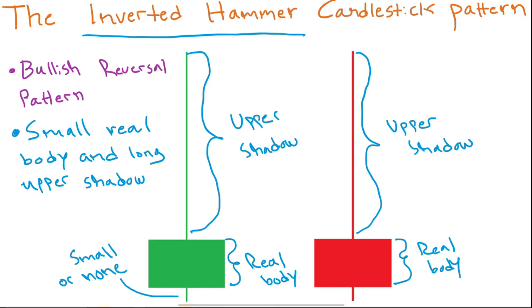In general, we want the upper shadow to be at least two times as long as the real body. In this case you can see the upper shadow is pretty much four or five times as long, but at minimum we want the upper shadow to be at least two times as long as the real body.